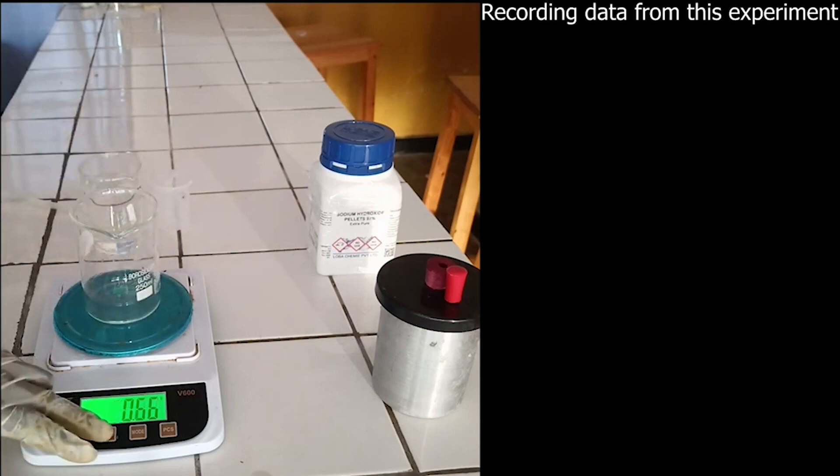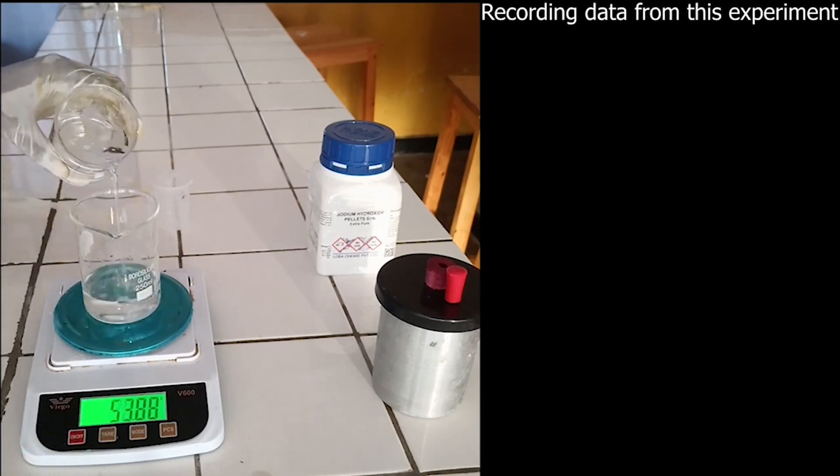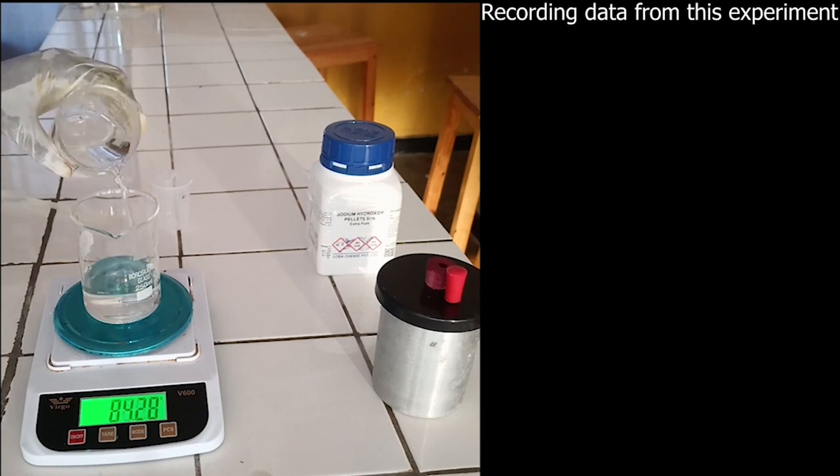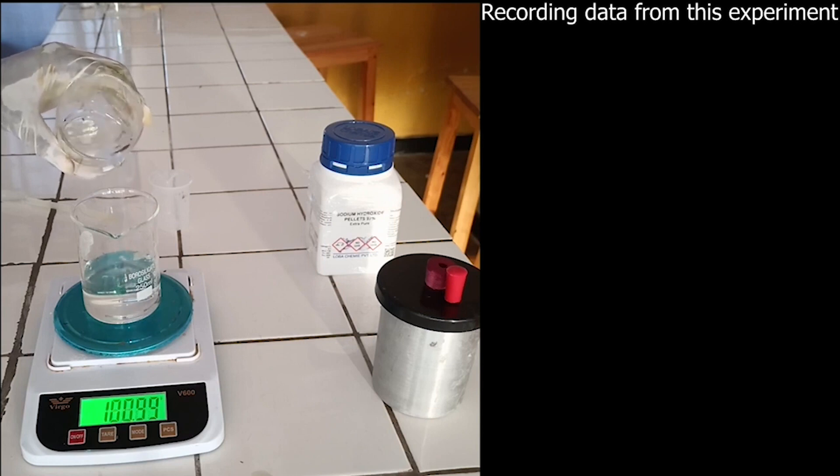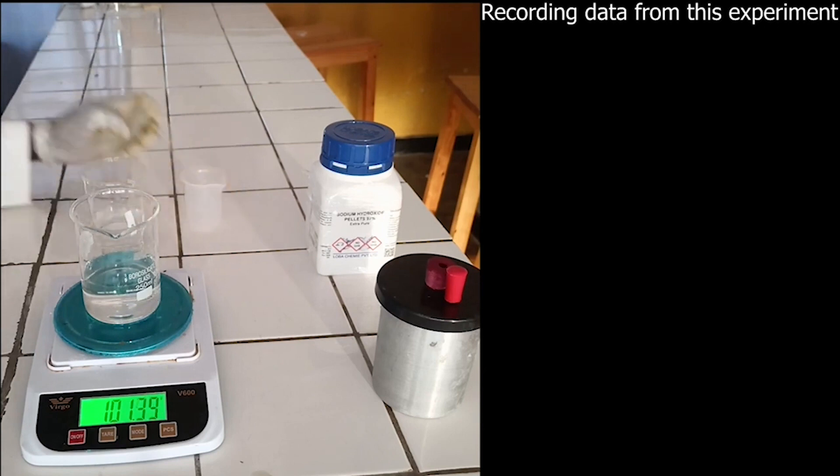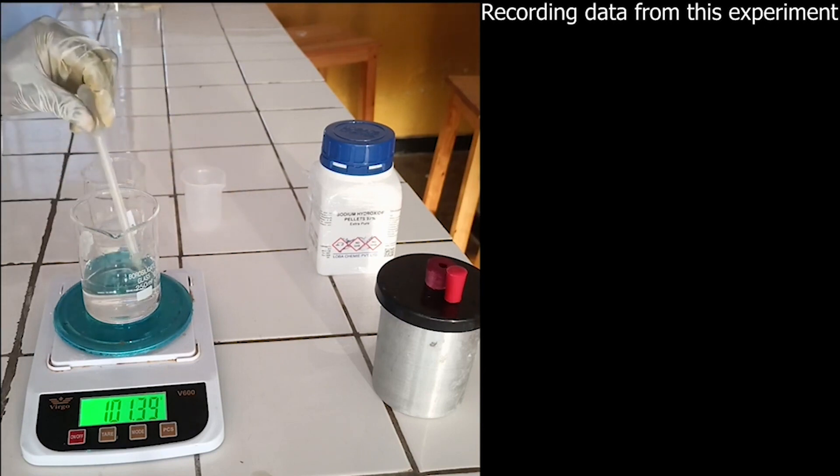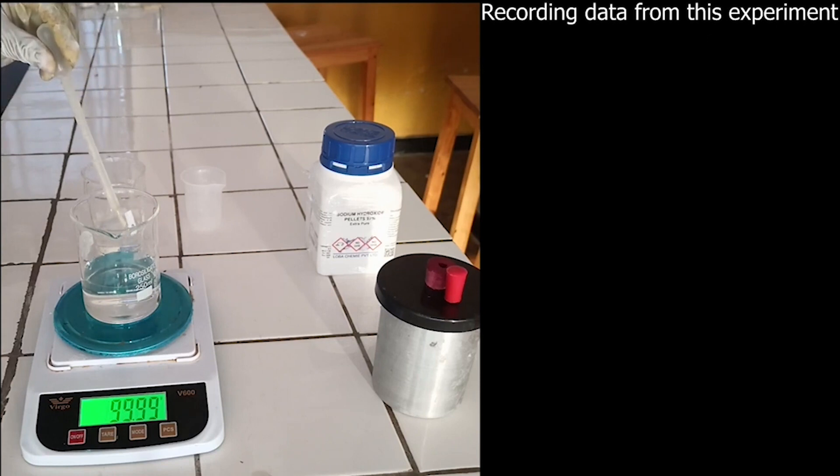Set balance to zero and weigh the mass of water. The mass of water is equal to 100.01 grams.